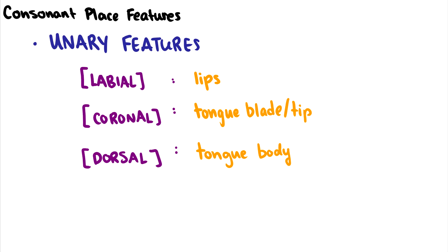This video we're going to talk about consonant place features. The first three big features we need to talk about for place features are the unary features. Unary features are not plus or minus. A sound either has it or it doesn't.